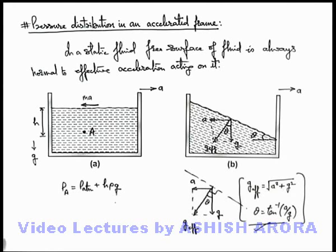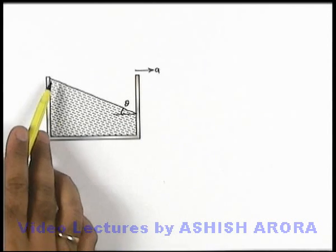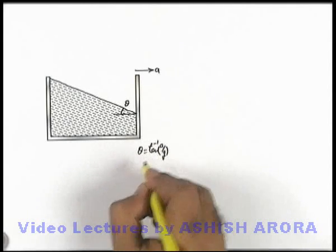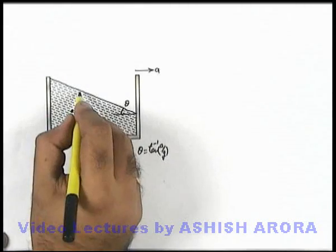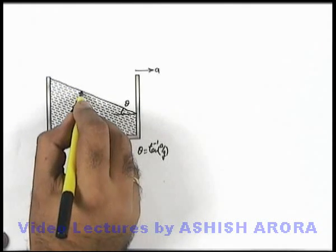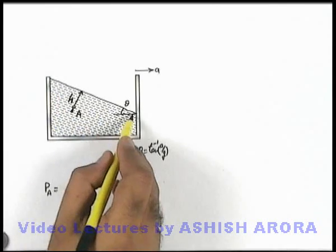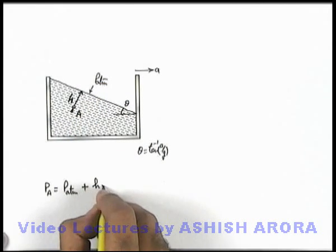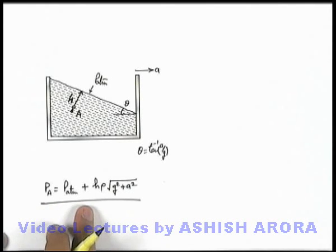In the next slide, let's discuss the pressure distribution in this accelerated container. The free surface of the liquid becomes inclined at angle θ = tan⁻¹(ay/g). If we wish to find the pressure at a point A within the fluid body, we need to take its depth h below the free surface along the direction of effective acceleration. Then the pressure at point A can be directly written as P_atmospheric + h·ρ·√(g² + ay²). This is one method to find pressure at point A.